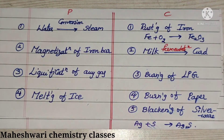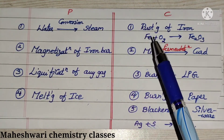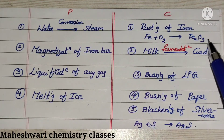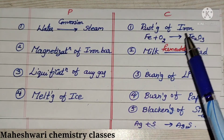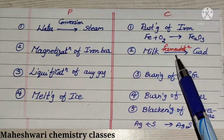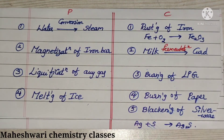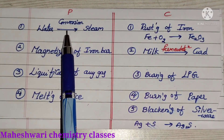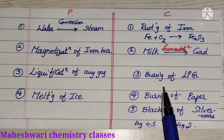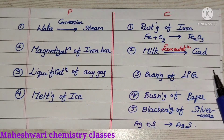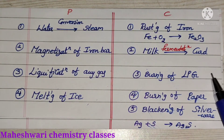Next, chemical change. The rusting of iron is a chemical change: Fe plus O2 gives Fe2O3. Milk converting to curd — fermentation — is also a chemical change. Next, burning of LPG is a chemical change. Liquefaction of any gas is physical change, but burning of LPG is a chemical change.